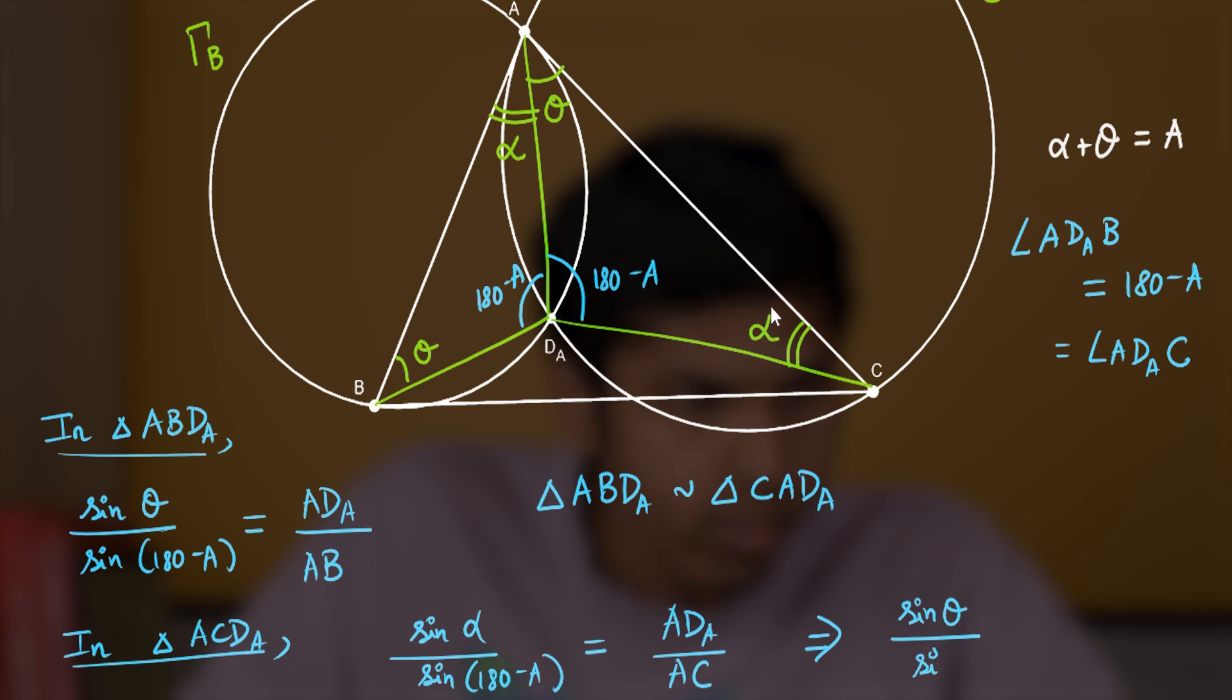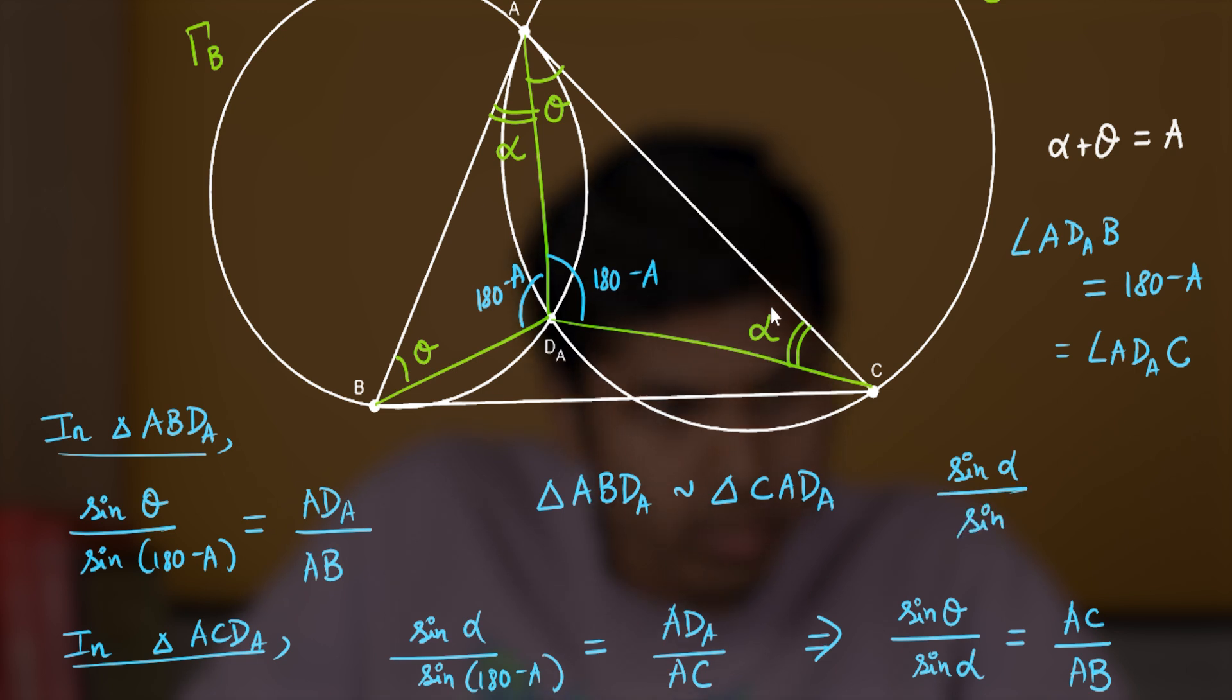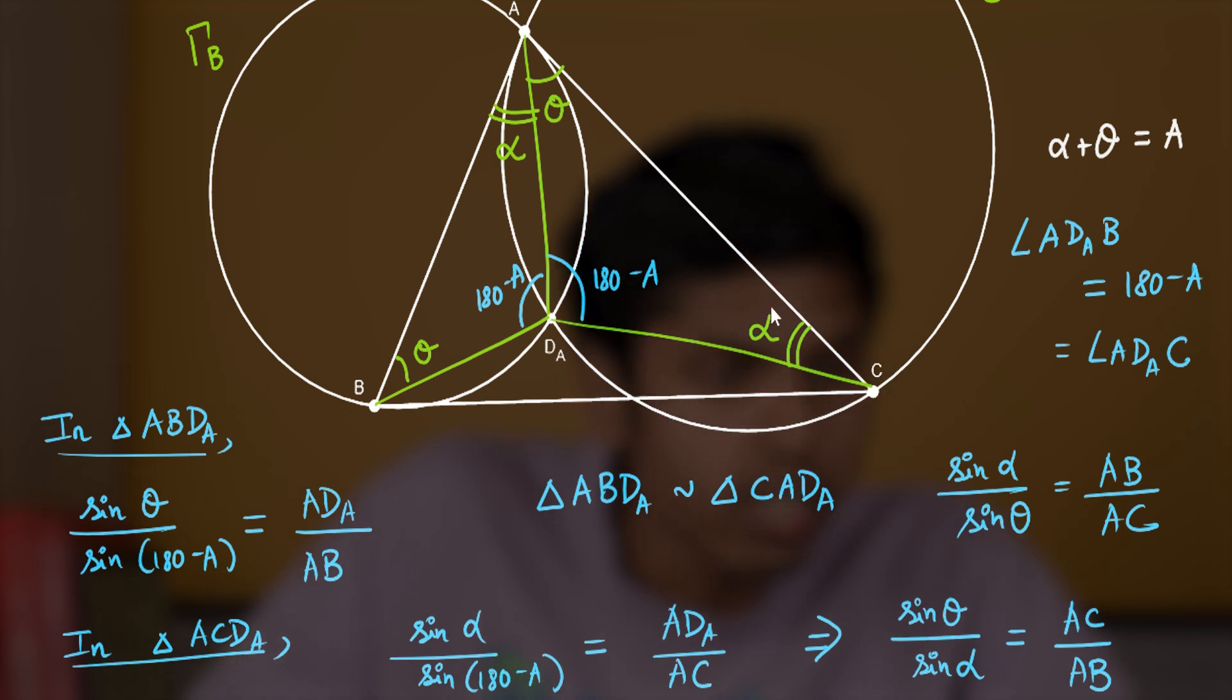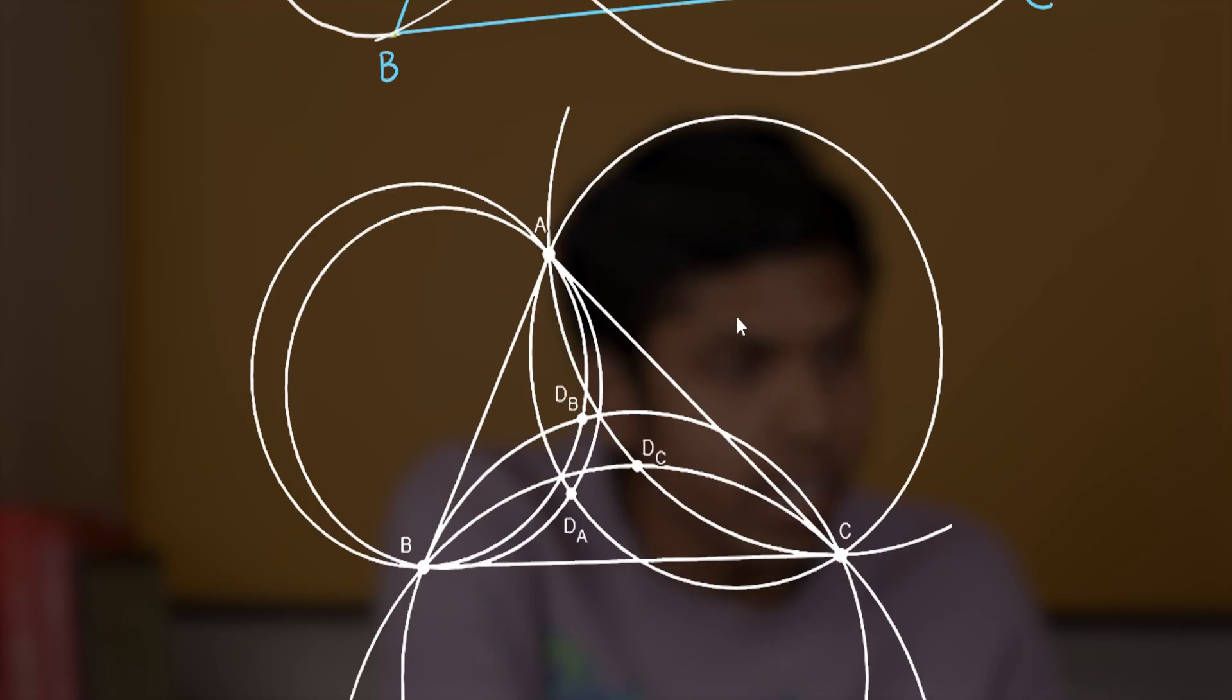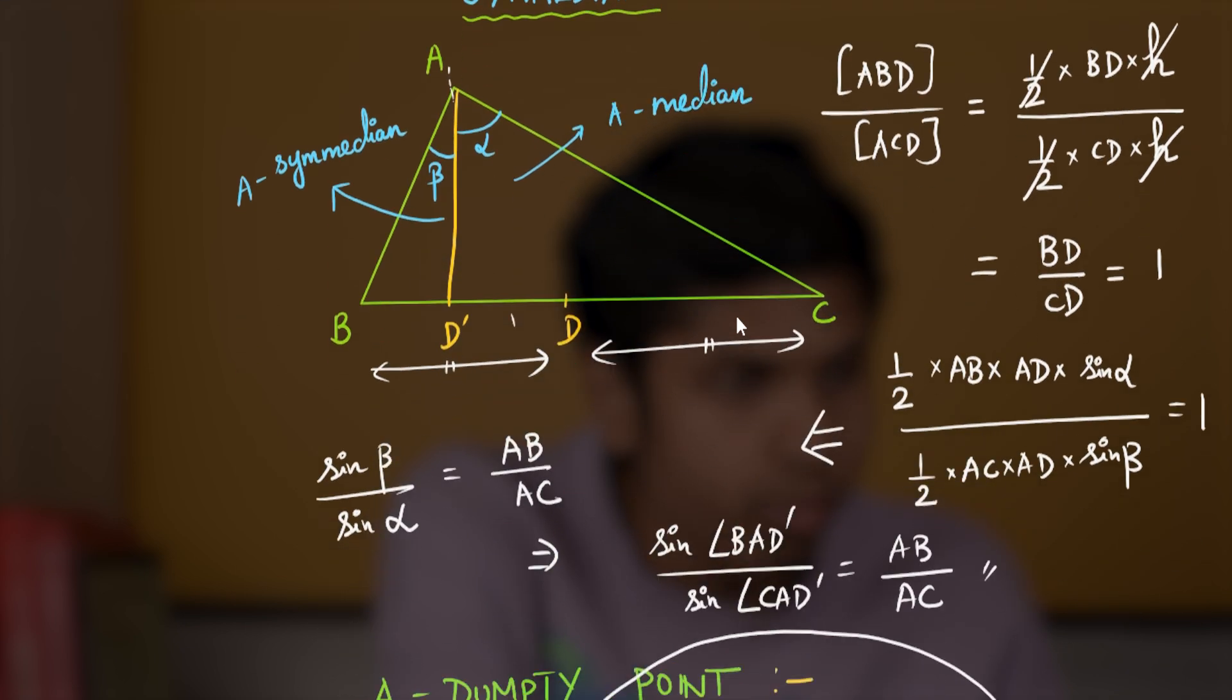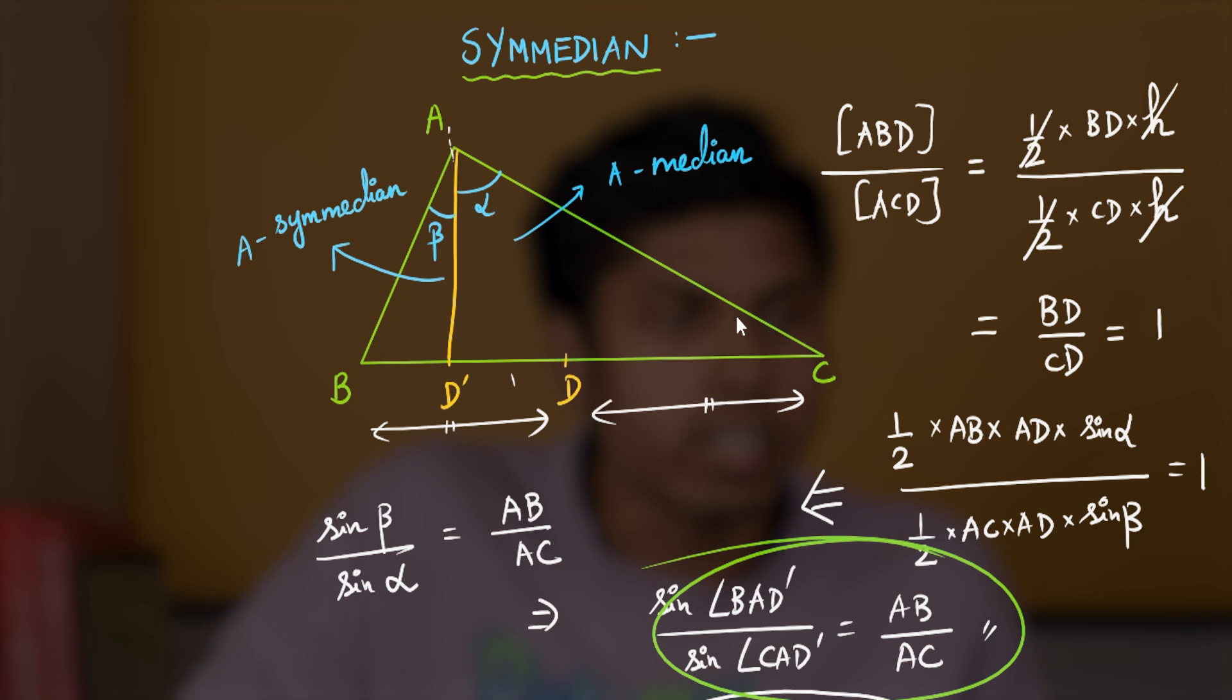But wait, this is something we have learned already, right? The sine of angle made with AB divided by sine of angle made with AC equals AB by AC. This is exactly the same ratio we obtained for C-median, AB by AC. Therefore, the line AD′, which is the AC-median, is same as AD_A.